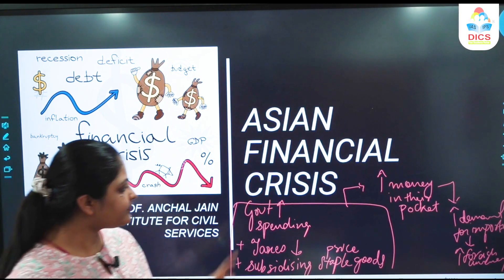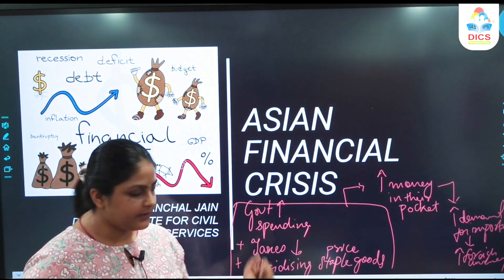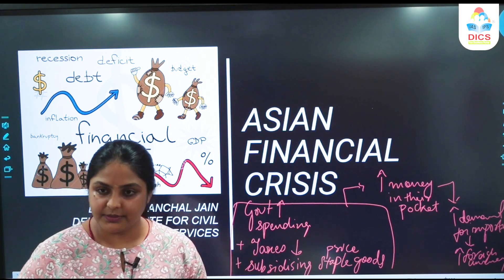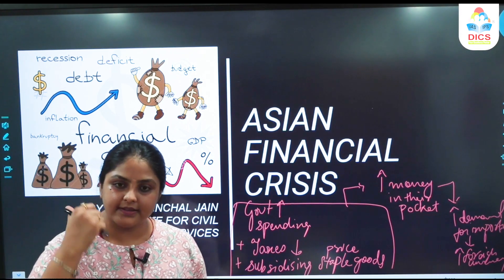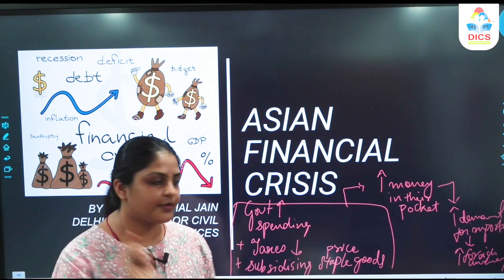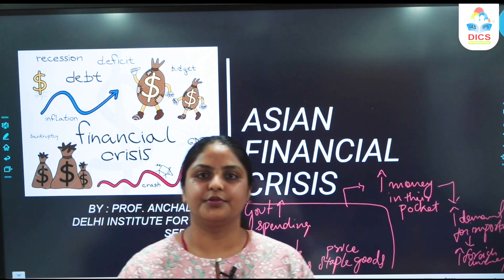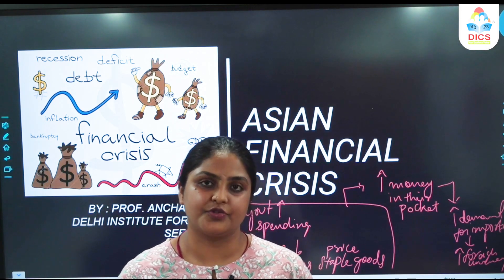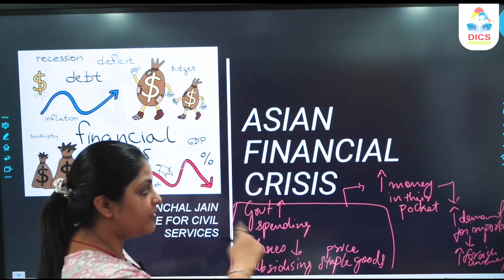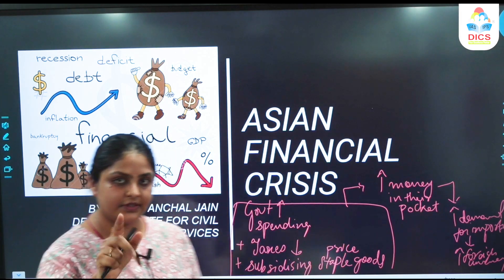Starting with what? Government increased spending, taxes reduction, and subsidized staple goods — subsidies, low taxes, and high government spending. This is the root cause of the actual issue. Now let's get into the Asian financial crisis directly. You've understood the basics and what the consequences are. Let's understand how this happened in case of Asia.